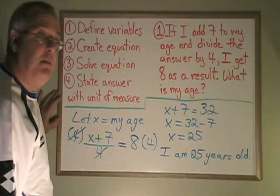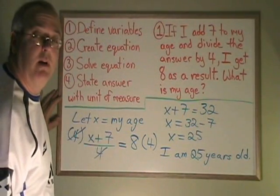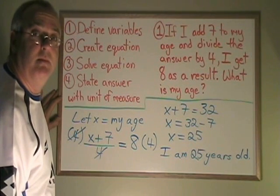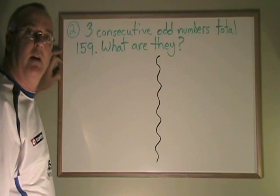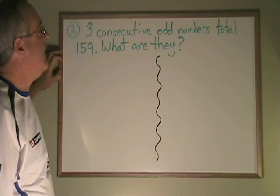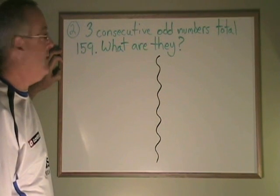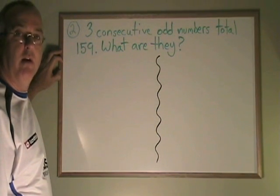This series of steps can help us get full marks on algebra word problems. In this second example, three consecutive odd numbers total 159. What are they?